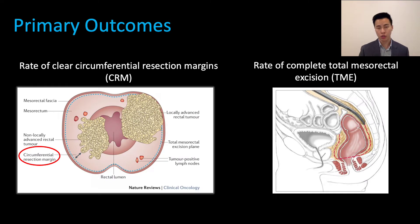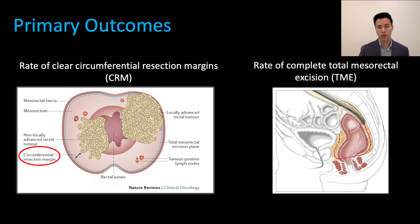We measured two primary outcomes. The first is the rate of clear circumferential resection margin, defined as the closest distance between the tumor and the circumferential margin being more than one millimeter. The second is the rate of complete total mesorectal excision.